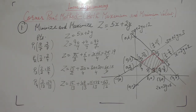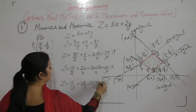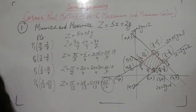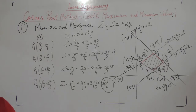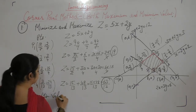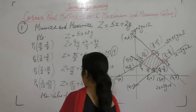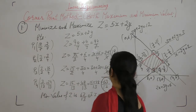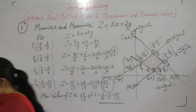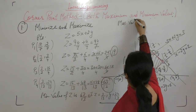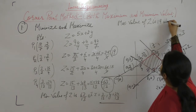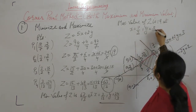Clearly, z is minimum at x equals 3/13 and y equals 24/13, with minimum value of z equals 63/13. Z is maximum at x equals 7/2 and y equals 3/4, with maximum value of z equals 19.